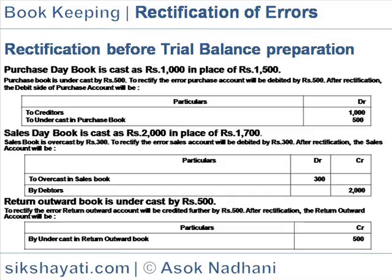Return outward book is undercast by Rs.500. To rectify the error, the return outward account will be credited further by Rs.500. After rectification, the return outward account will be as follows.